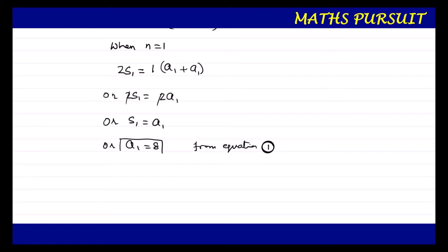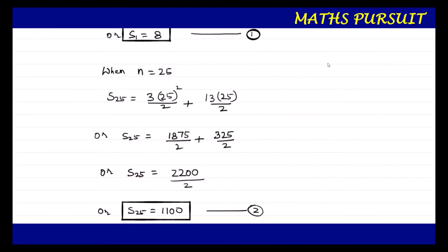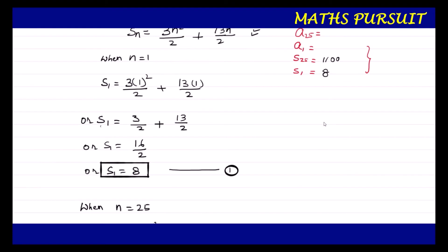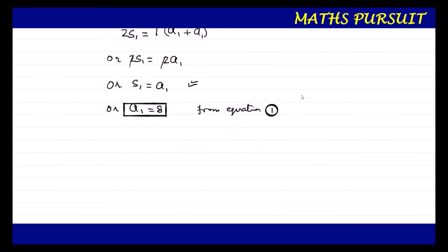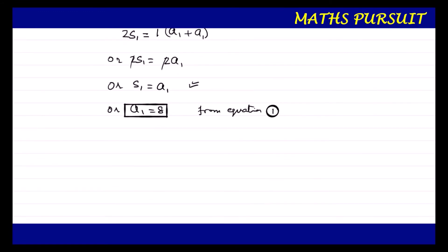So we got a1 = 8 because S1 = a1, and from equation 1, S1 = 8. We are now done with almost all our requirements: S1 = 8, S25 = 1100, and a1 = 8. Now ultimately we are going to find out the value for A25.